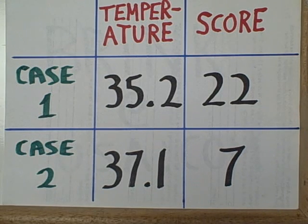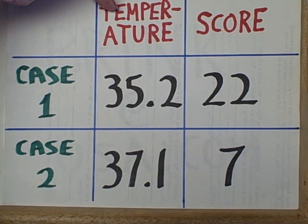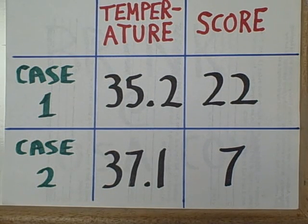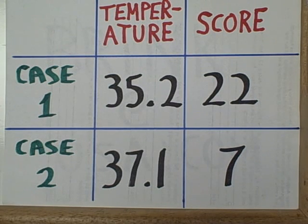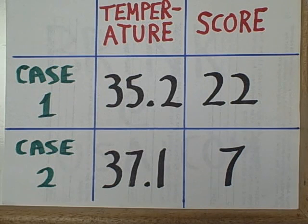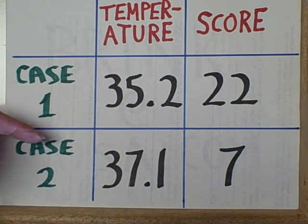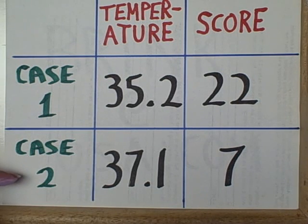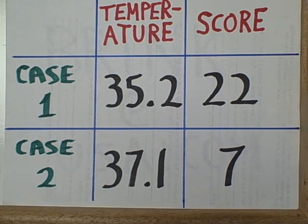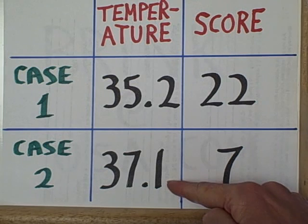Let's suppose that our first variable is temperature measured in degrees centigrade, so we can enter a specific number even including a decimal point. Just type in 35.2 and then enter that by either hitting the enter button or by using one of the arrow keys. If you're going to enter the score for our second subject, case 2, you could just use the downward arrow key, get into that particular cell, and then enter the temperature of this person: 37.1.